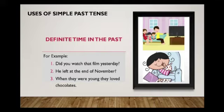The first common use of simple past tense is for a definite time in the past — when we specify when something happened, using time expressions like yesterday, three weeks ago, last year, or when I was young. For example: 'Did you watch that film yesterday?' Here, 'yesterday' specifies a time which is over now.